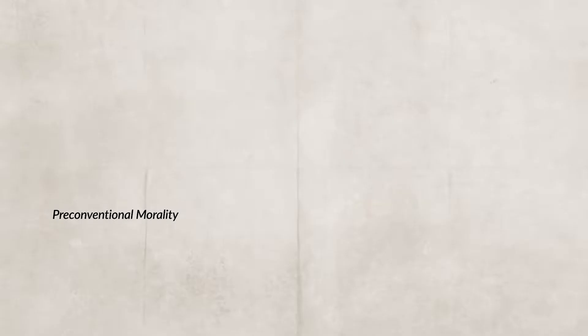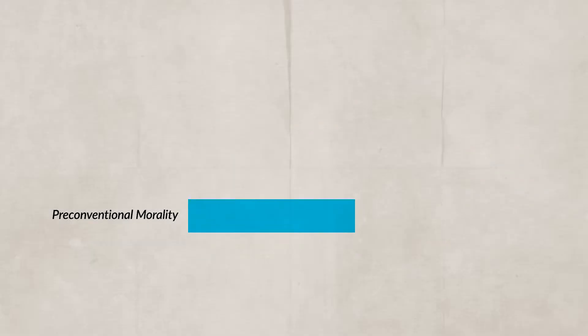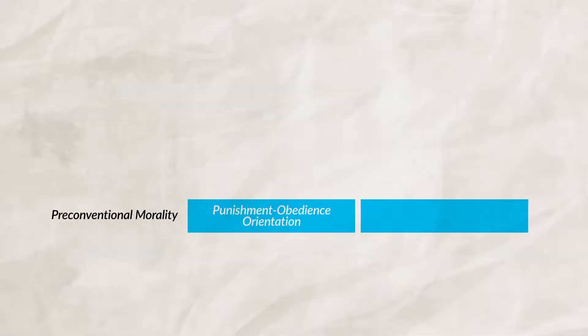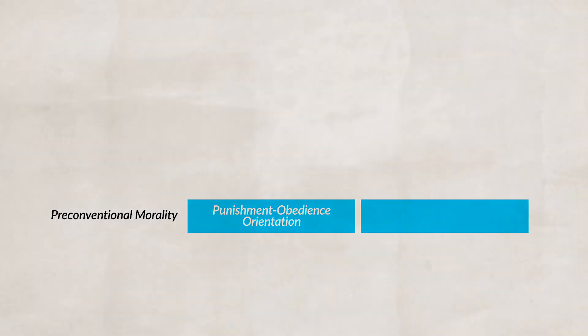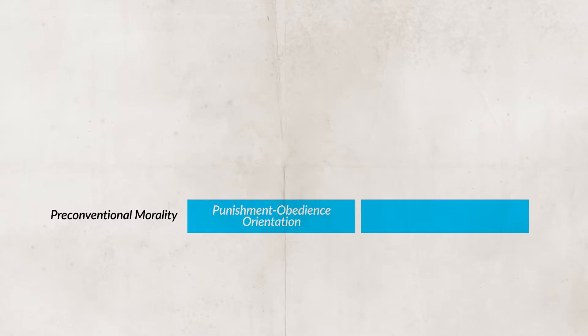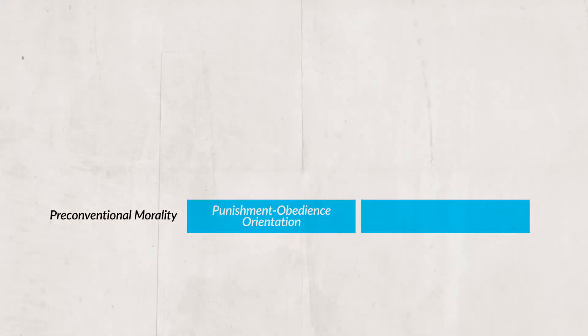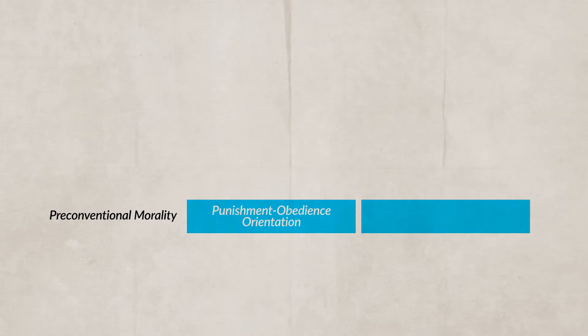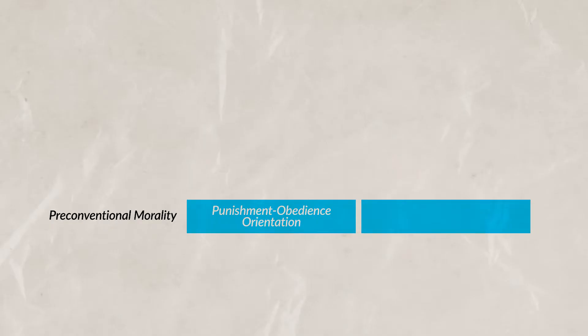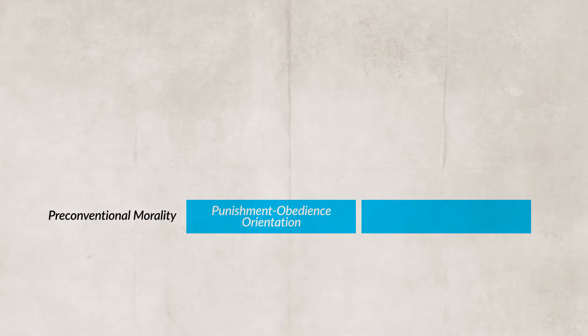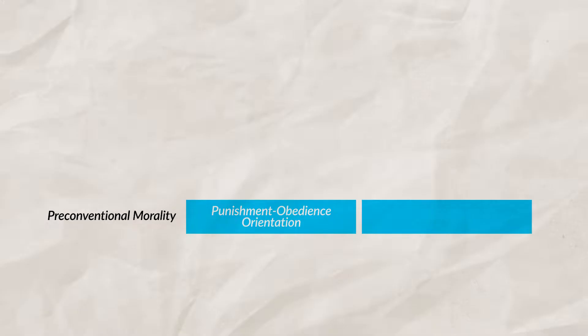Kohlberg's theory consists of three different levels and six different stages. The first level is pre-conventional morality, which consists of two stages. The first is punishment and obedience orientation. Here, morality is often defined as what you can get away with. There's a fear of punishment during this stage. Children are individually focused, and rewards are important to the child.